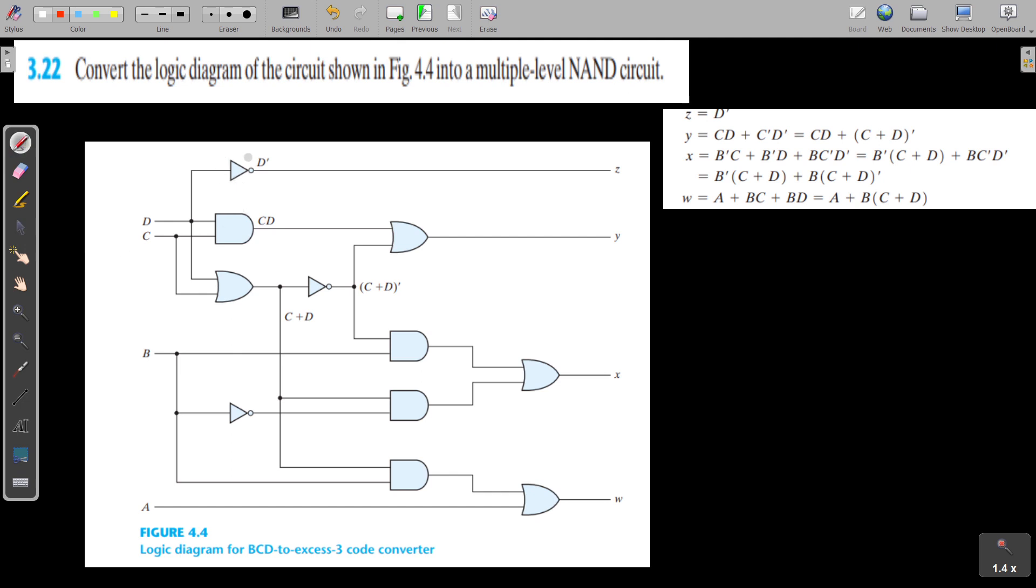So here the first one, D is converted to D dash using this inverter, right? So this inverter can be converted as NAND. Then it's okay. Then here we have B and C are given as input to this AND gate. So it is CD.